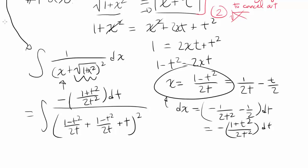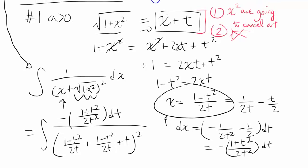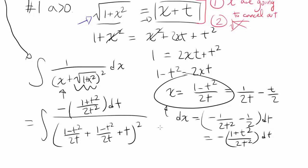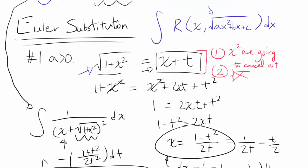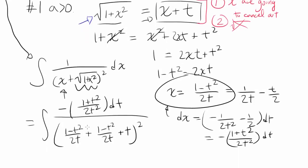Now we have our new expression in terms of t and we don't have any radical function. We used to have this crazy square root of 1 plus x squared that was stopping us from doing anything to this integral, and we no longer have square root of x or square root of t. This is what Euler substitution is about — you have a rational function involving a square root of a quadratic in x, and Euler substitution helps you replace it with a function of t.